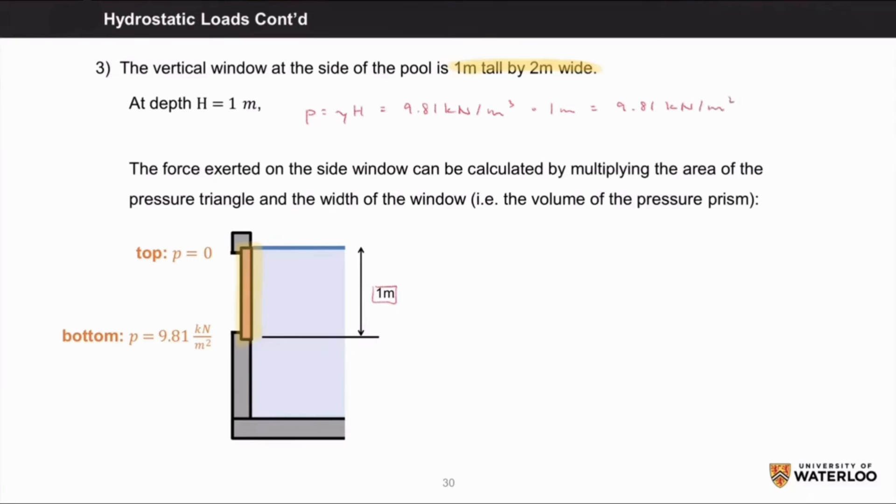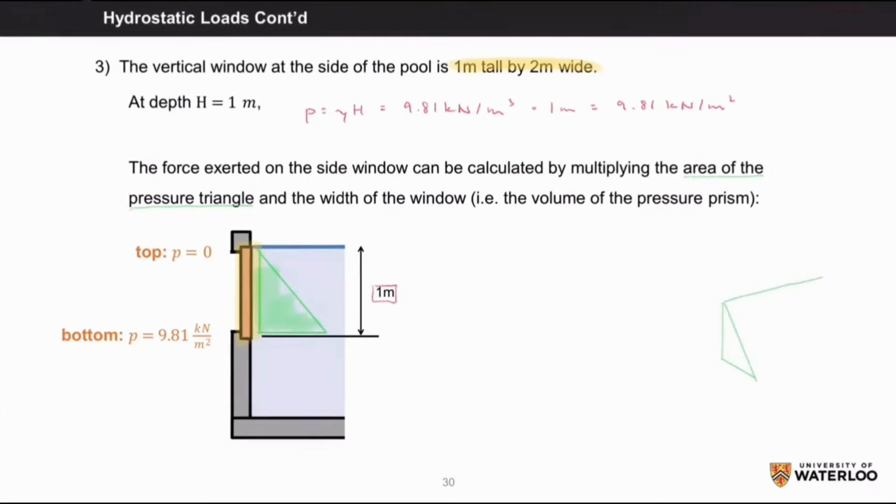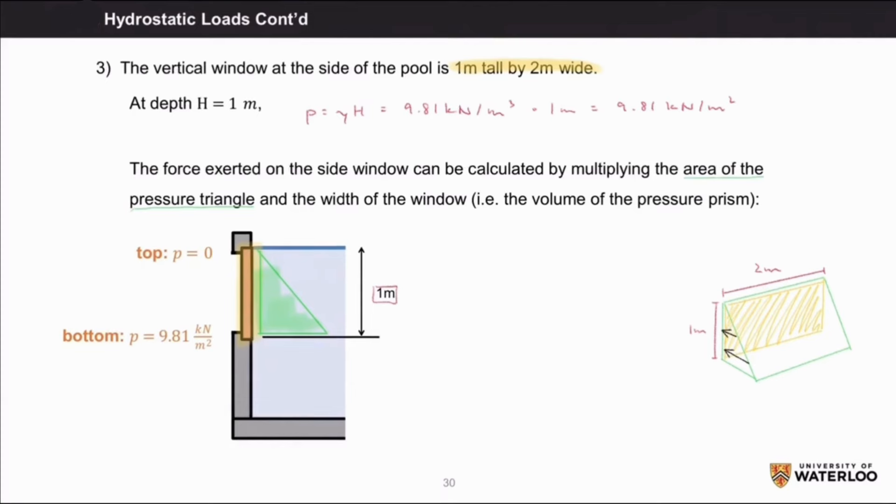The force exerted on the side of the window can be calculated by multiplying the area of the pressure triangle by the width of the window. And again, I'm drawing a triangular prism just to show the volume of this pressure prism. Remember that pressure acts linearly. From the equations, we get an area of 4.9 kilonewtons per meter for the pressure triangle and a force of 9.8 kilonewtons.